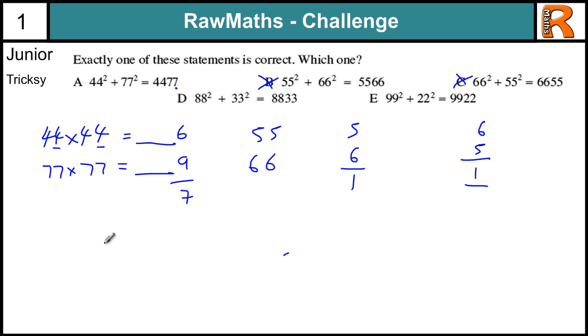It's looking good for A, but let's try D. 88 squared is 64. And 33 squared is 9. So that adds up to 13. Oh no, we've got 1. We've got to check. And then we've got 99 squared, which is going to end in a 1. And 22 squared, which is going to end in a 4. And that adds up to 5. So that doesn't work. So we're left with two possible answers. So let's work those out.